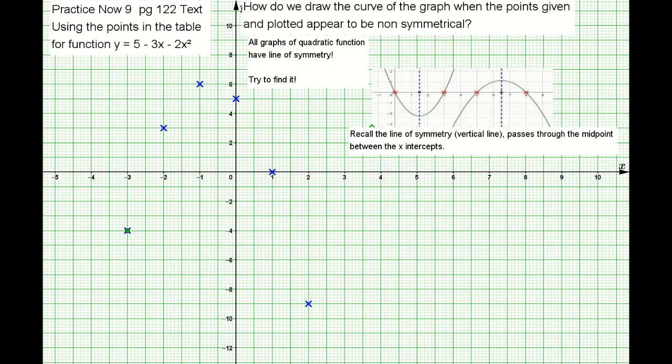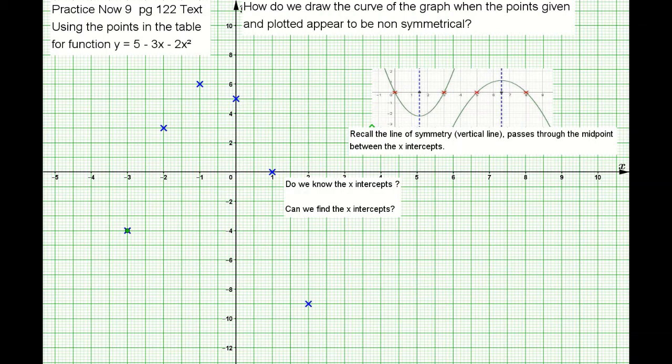The vertical line of symmetry actually passes through between the x-intercepts. In fact, if you draw any horizontal line through the graph or through the curve, you will see that the line of symmetry is in the middle between the two points of intersection. We're going to try to look for it now.